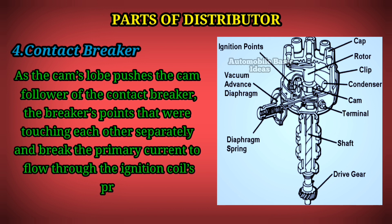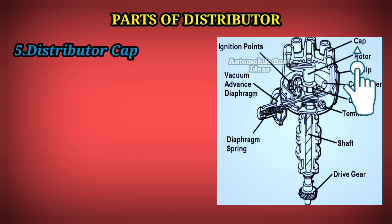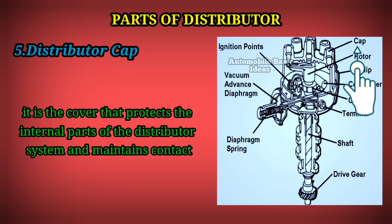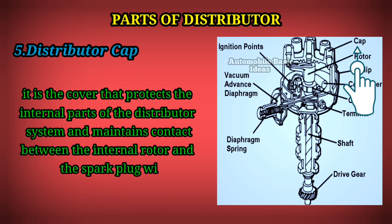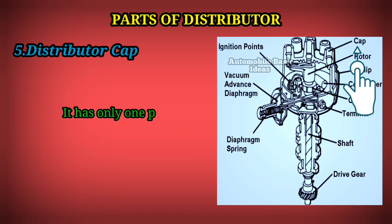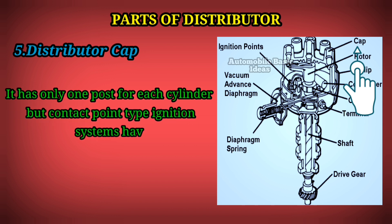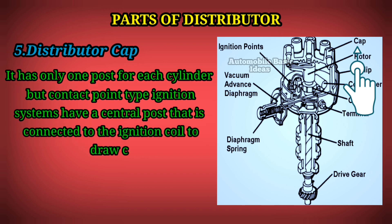5. Distributor Cap: It is the cover that protects the internal parts of the distributor system and maintains contact between the internal rotor and the spark plug wires. It has only one post for each cylinder, but contact point type ignition systems have a central post that is connected to the ignition coil to draw current from it.